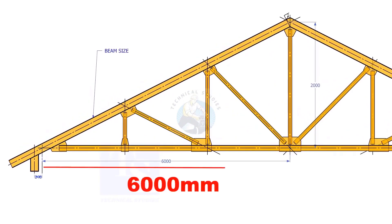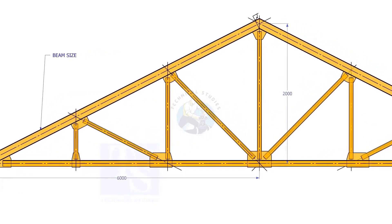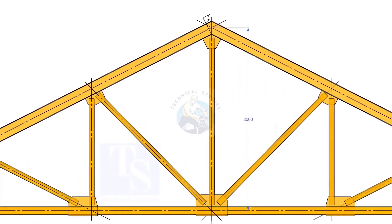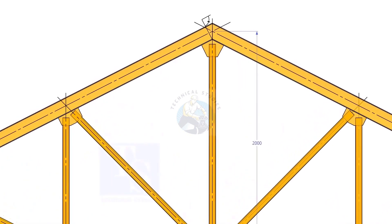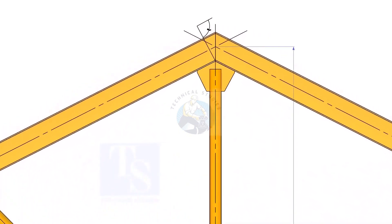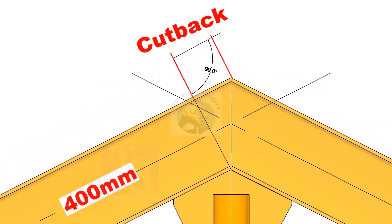Assume that the half span of a truss is 6,000 mm and the height of the truss is 2,000 mm. How to calculate the cutback of a 400 mm wide girder?